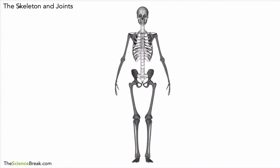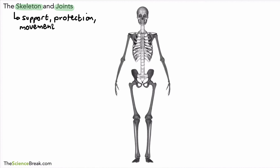Hello, today we're looking at the skeleton and we're going to focus on the joints in the skeleton. As a quick recap, the skeleton has different jobs: one is for support, one is for protection — for example, the brain, heart and lungs are protected by bones in the skeleton. It allows for movement when it works with muscles, and some bones produce blood cells. These are the main functions of the skeleton, and today we're talking about the function of joints.